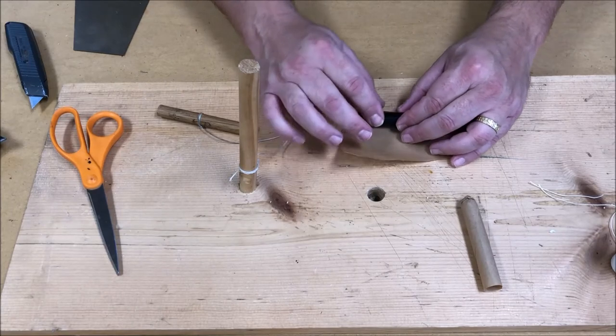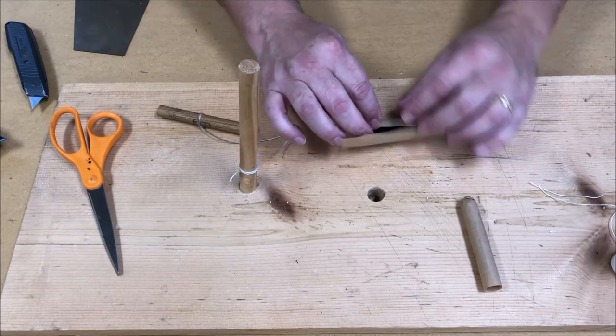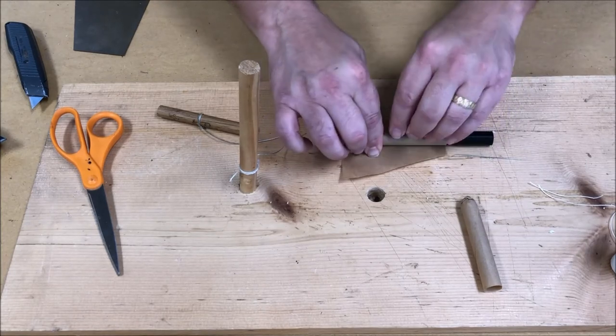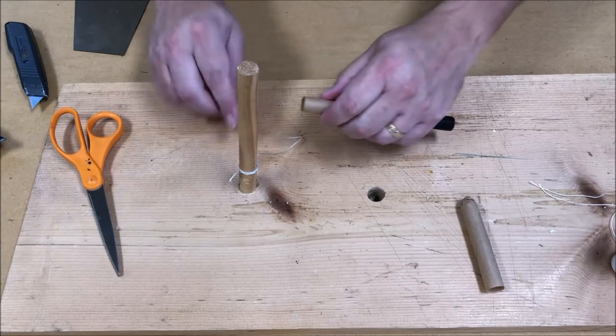Then we just make a second tube, same way as the first tube, roll it up, and choke it.